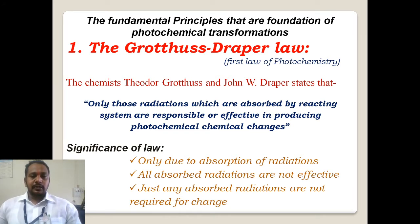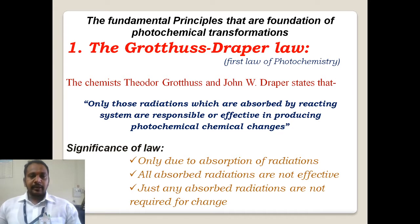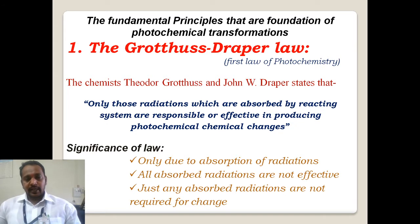The first law of photochemistry is the Grotthuss-Draper's Law. Grotthuss and Draper are the names of two chemists — Theodore Grotthuss and John W. Draper — who gave the first law of photochemistry. According to them, the statement of Grotthuss-Draper's Law is: only those radiations which are absorbed by a reacting system or by a reacting substance are responsible or effective in producing any photochemical changes.